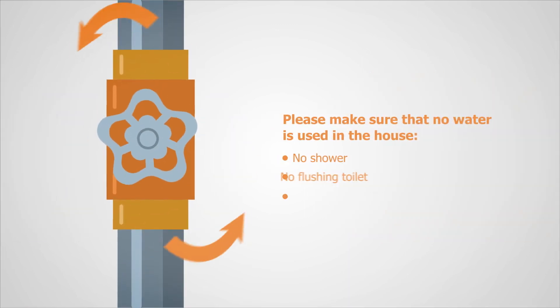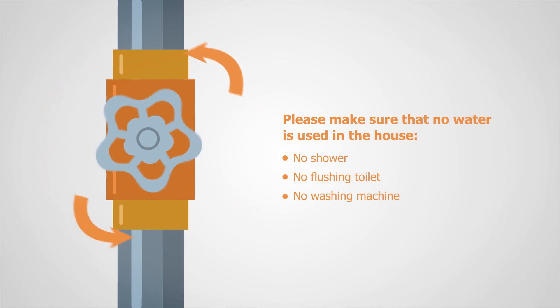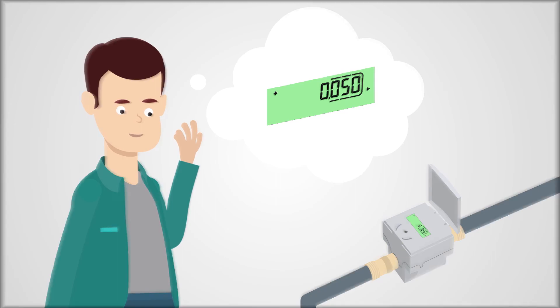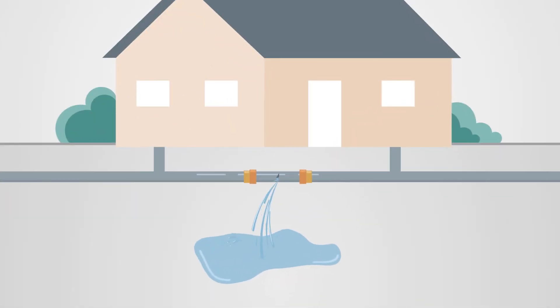To do that, Mr. Smith must first turn off all the water connections in his house. If the Hydrus still shows a water flow, then it's obvious.